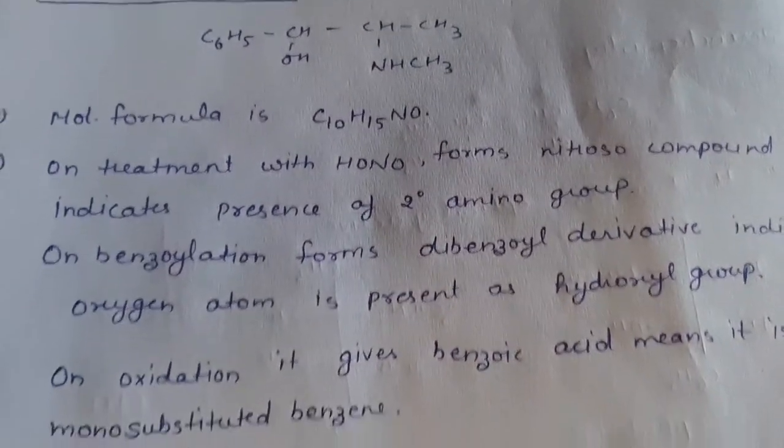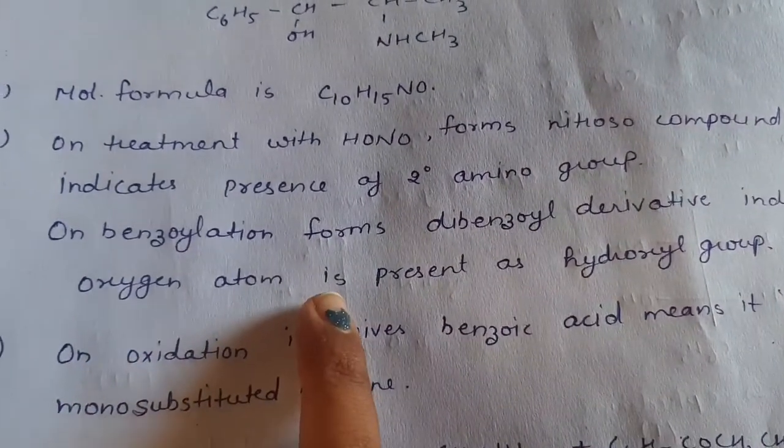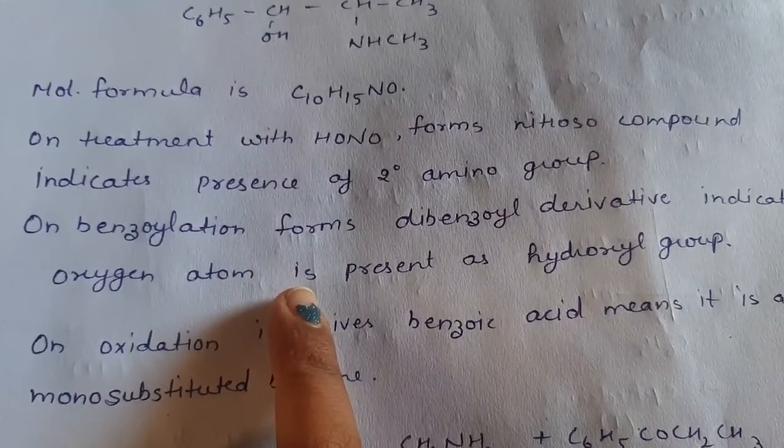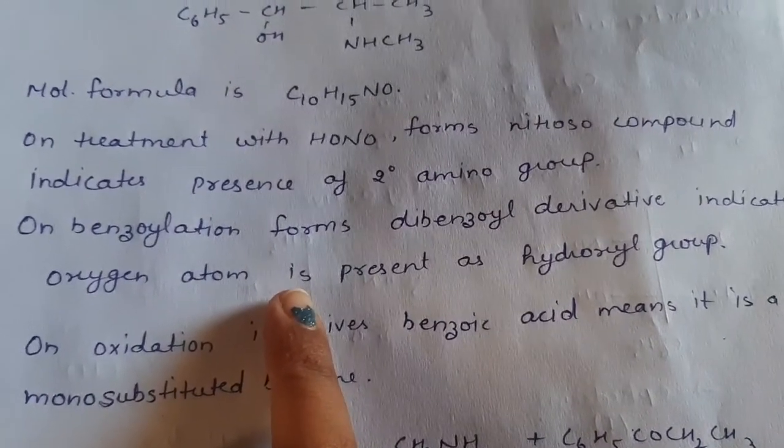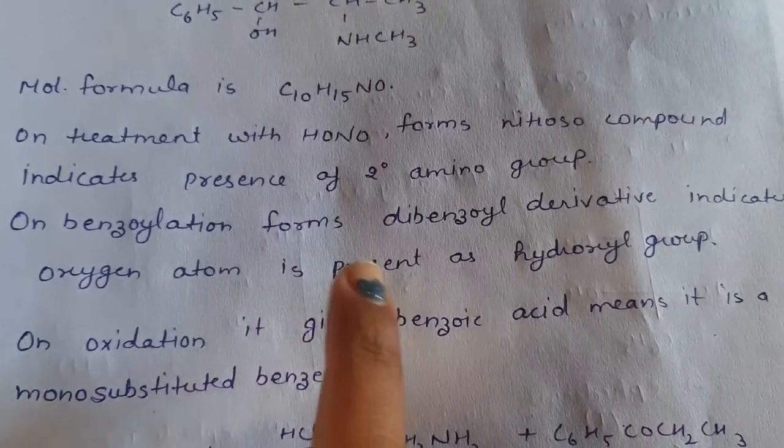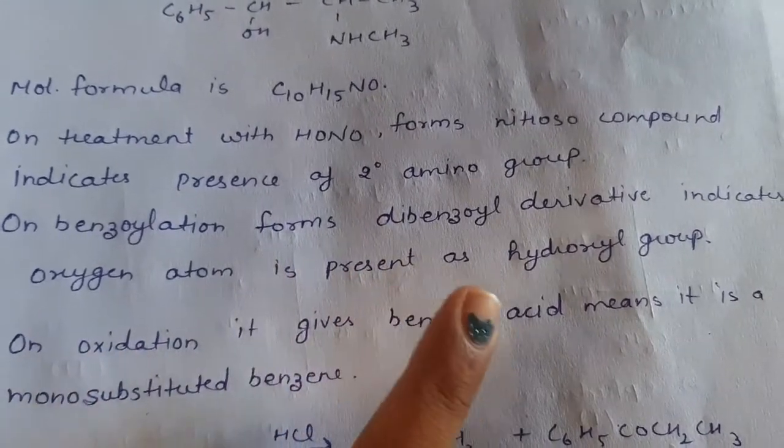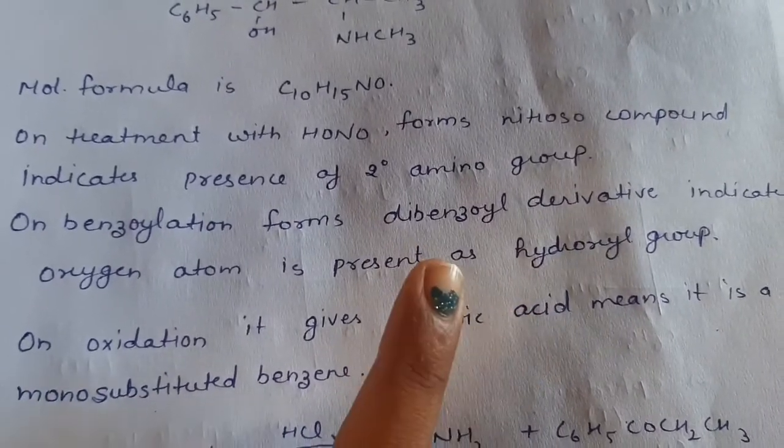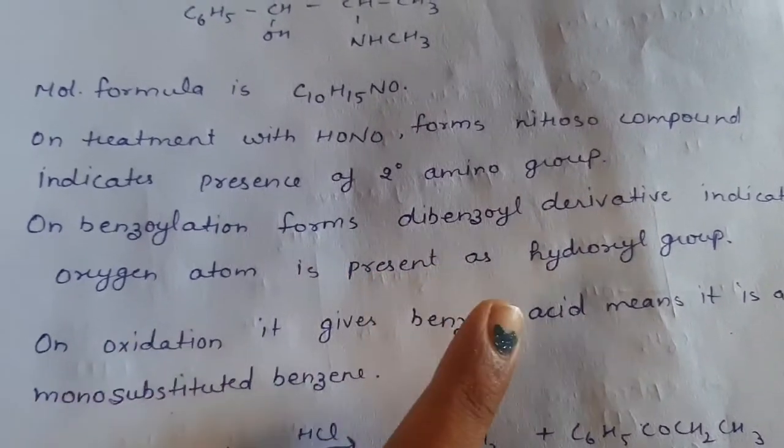Now, the third point, on benzoylation of ephedrine, it forms dibenzoyl derivative. And the formation of this dibenzoyl derivative tells us that there is an oxygen atom. Because one benzoyl derivative will be formed by NHCH3 group and second will be formed by OH group.